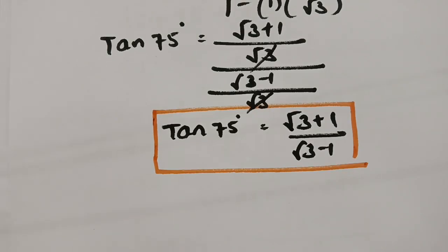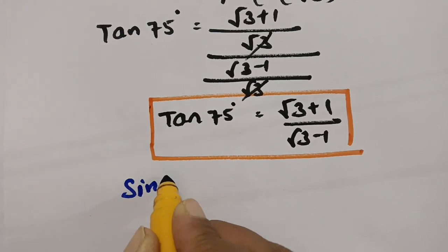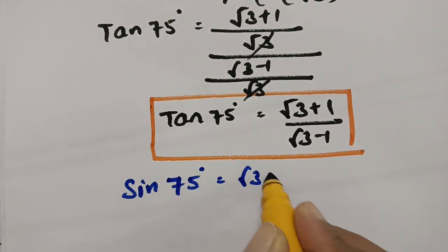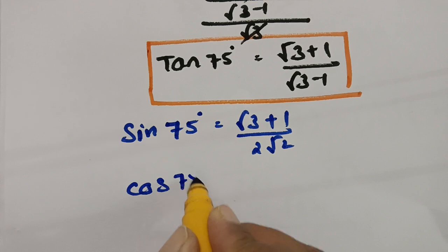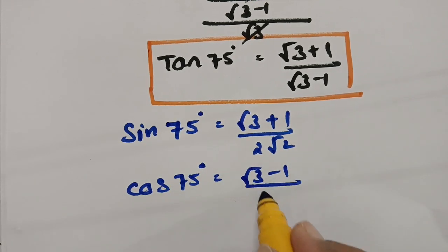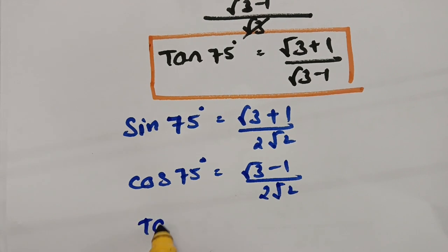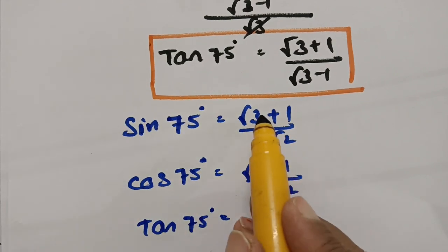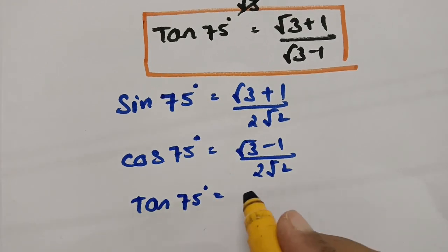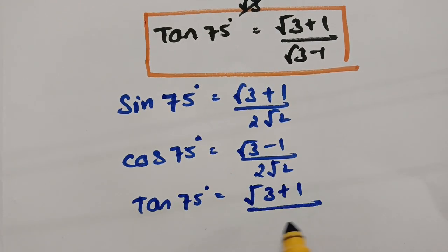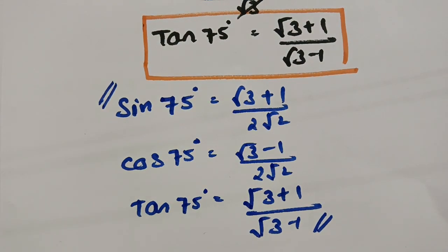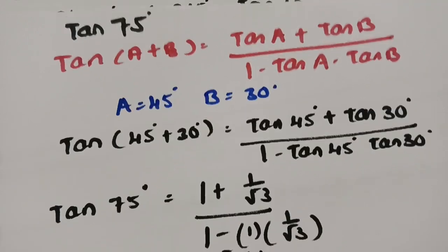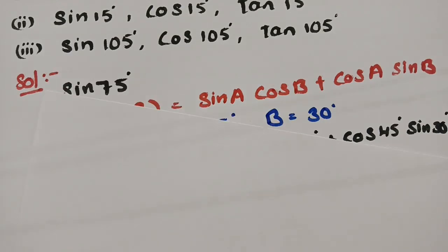Therefore, from the above, we got sin 75 degrees as root 3 plus 1 by 2 root 2, cos 75 degrees as root 3 minus 1 by 2 root 2. And for tan 75, using sin theta by cos theta, if you cancel the denominator, this will be root 3 plus 1 by root 3 minus 1. These are the solutions for sin 75 degrees, cos 75 degrees, and tan 75 degrees. It is also very easy to follow the second solution.